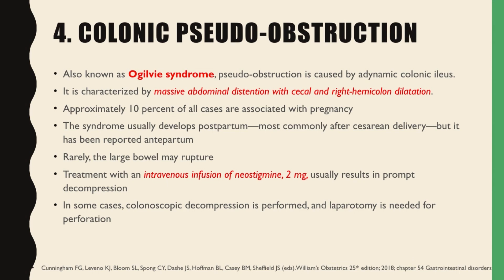Next, we have colonic pseudo-obstruction, also known as Ogilvie syndrome. Pseudo-obstruction is caused by adynamic colonic ileus, characterized by massive abdominal distension with cecal and right hemicolon dilatation. Approximately 10% of all cases are associated with pregnancy, and this syndrome usually develops postpartum, most commonly after cesarean delivery, but it has been reported antepartum. Rarely, the large bowel may rupture, and treatment with an intravenous infusion of neostigmine 2 mg usually results in prompt decompression. In some cases, colonoscopic decompression is performed, and laparotomy is needed for perforation.